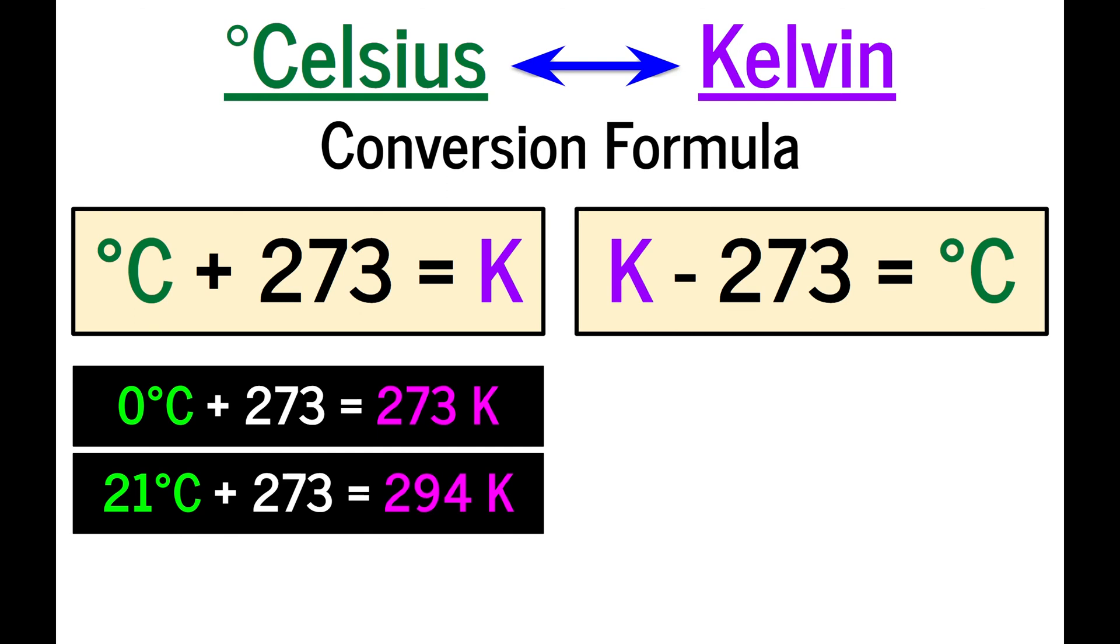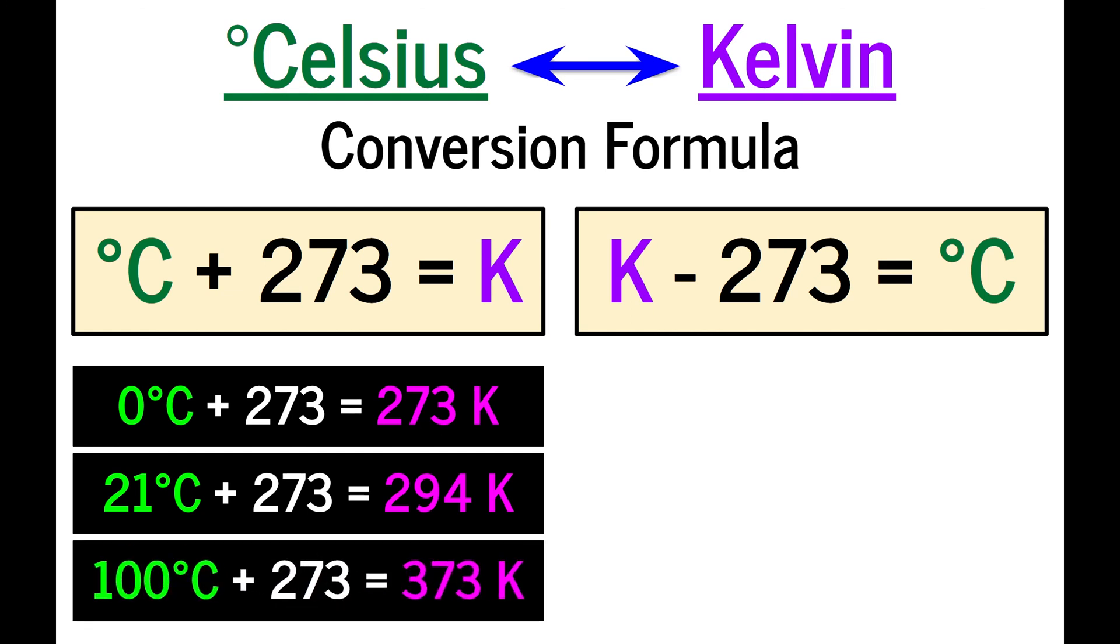That sounds like a lot, but 294 is actually room temperature. It's pretty comfortable. And then what about the temperature at which water boils? You probably know that that's 100 degrees Celsius. Add 273, and you find that water boils at 373 Kelvin.